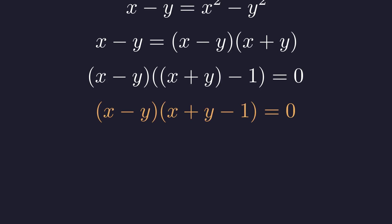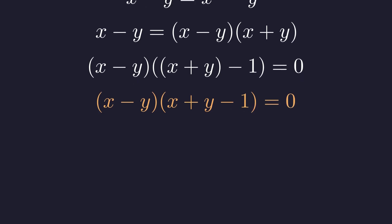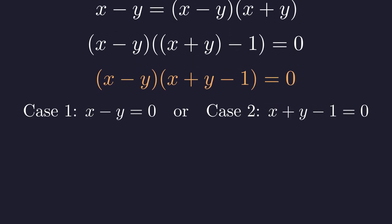This is the breakthrough. For this product to be zero, one of the two factors must be zero. We'll solve both cases, but remember to check for extra solutions due to earlier squaring. This splits our single problem into two much simpler cases. Case one is when x minus y equals zero. Case two is when x plus y minus one equals zero. Let's solve each one and check validity.